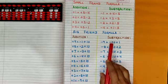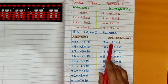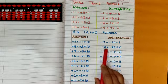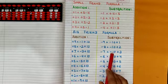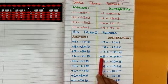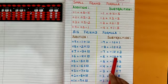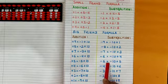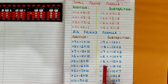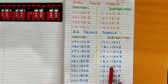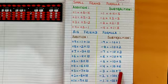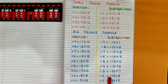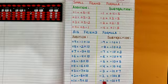Big friend formula for subtraction: minus 9 is equal to minus 10 plus 1, minus 8 is equal to minus 10 plus 2, minus 7 is equal to minus 10 plus 3, minus 6 is equal to minus 10 plus 4, minus 5 is equal to minus 10 plus 5, minus 4 is equal to minus 10 plus 6, minus 3 is equal to minus 10 plus 7, minus 2 is equal to minus 10 plus 8, minus 1 is equal to minus 10 plus 9.